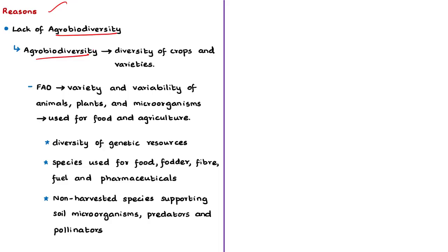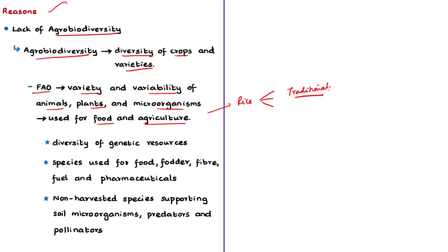Agrobiodiversity is also known as agricultural biodiversity — it relates to the diversity of crops and varieties. According to the Food and Agricultural Organization, agrobiodiversity is the variety and variability of animals, plants and microorganisms used directly or indirectly for food and agriculture, including crops, livestock, forestry and fisheries. A simple example is the rice crop — there are many traditional varieties in each state of India that even we do not know but which are existent in many parts of India. This is one example of agrobiodiversity.